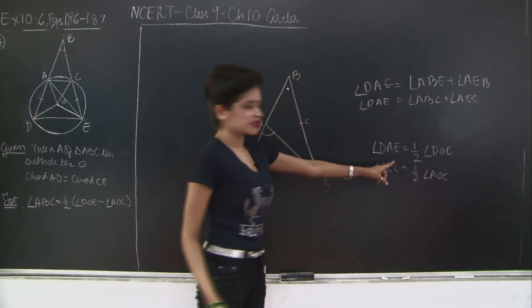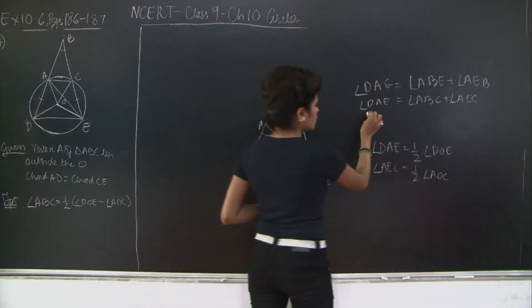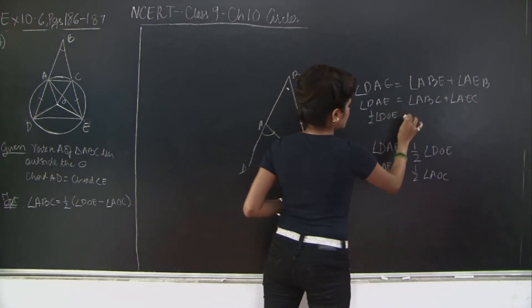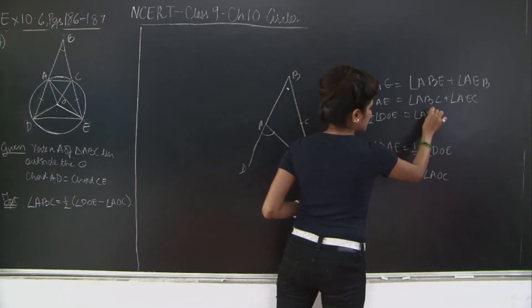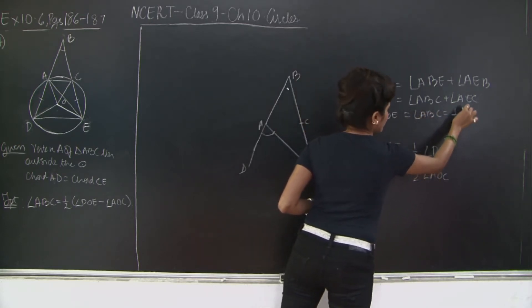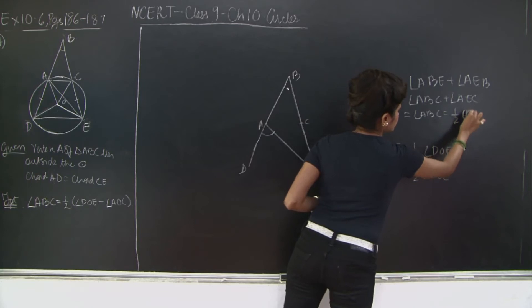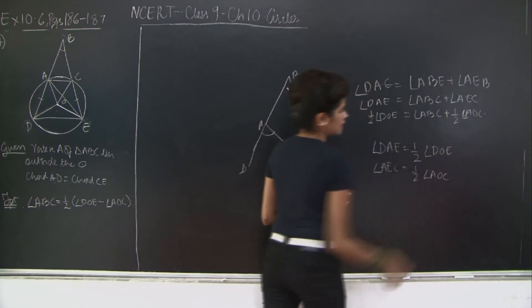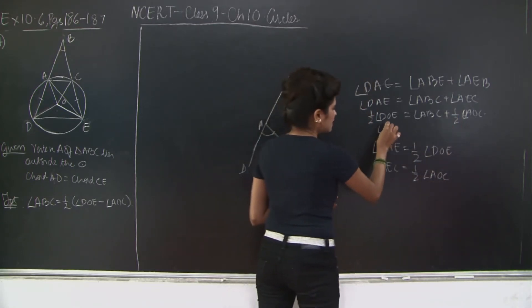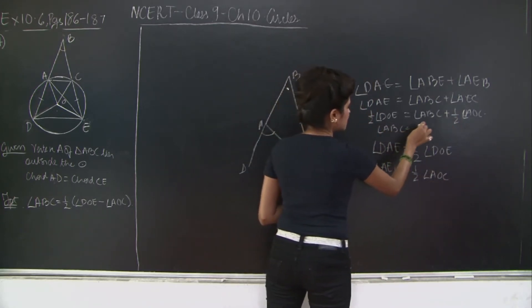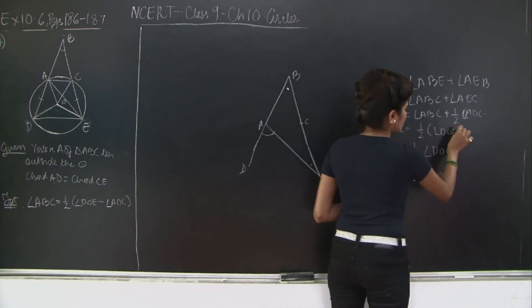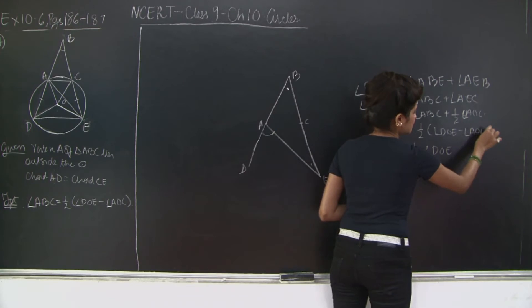Now if you substitute these values over here, what do you get? Half DOE is equal to ABC plus half AOC. Therefore, angle ABC is equal to half of angle DOE minus angle AOC.